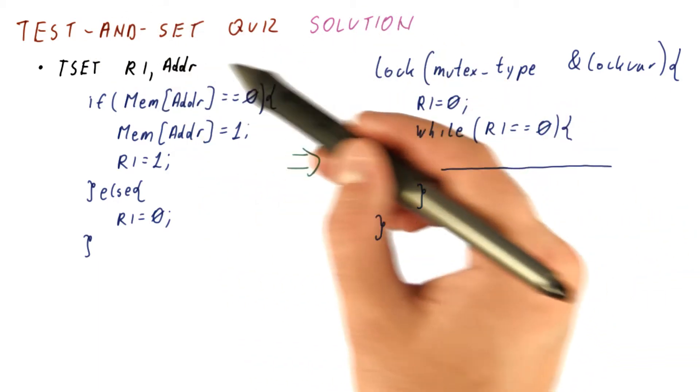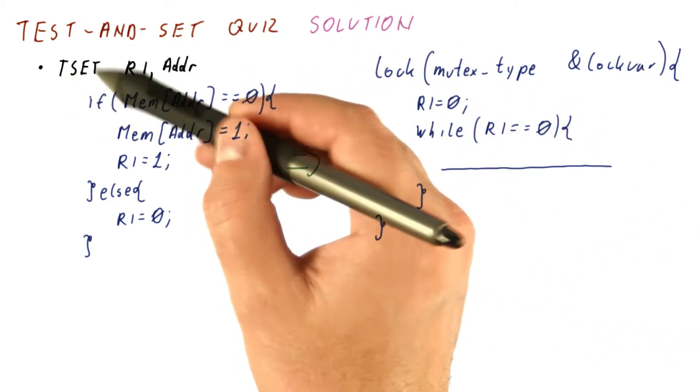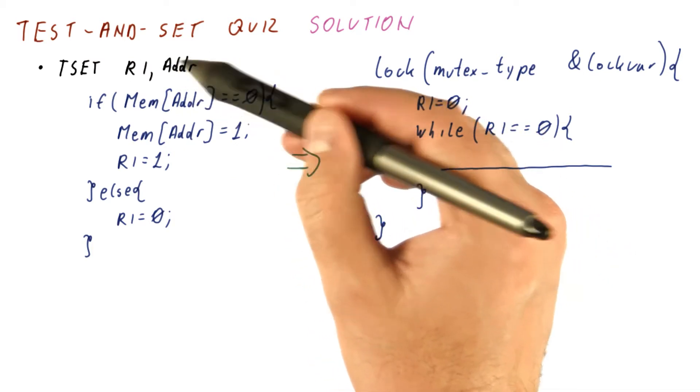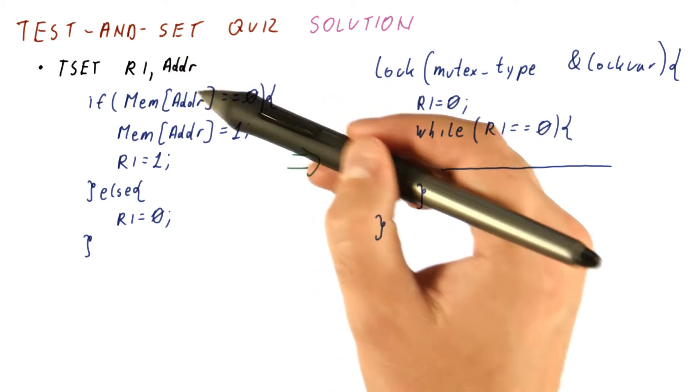Let's look at the solution to our test and set quiz. We have a test and set instruction that checks the memory location at the address defined in the instruction.